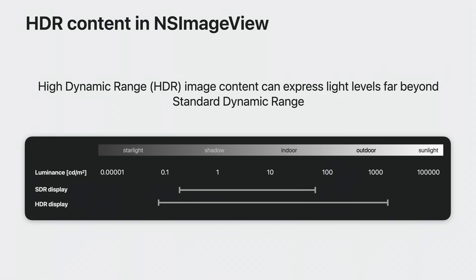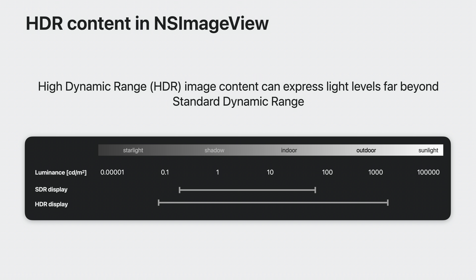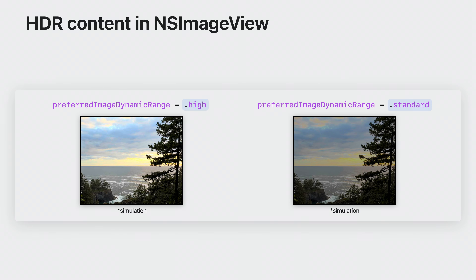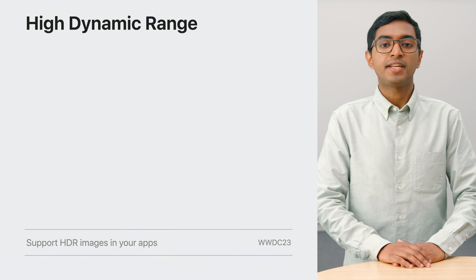HDR content can express light levels far beyond standard content. macOS has supported Extended Dynamic Range for several releases, allowing you to take full advantage of displays such as the Liquid Retina XDR in MacBook Pros and the Pro Display XDR. macOS Sonoma makes it easier than ever to display HDR content in your apps, with NSImageView gaining support for HDR content. Images containing HDR content will now be displayed in HDR on Extended Dynamic Range-capable hardware. To display HDR content in Standard Dynamic Range, use the preferredImageDynamicRange property to override. For more info, check out the Support HDR Images in Your Apps video.